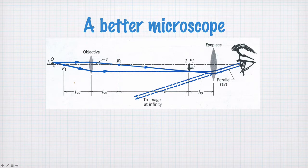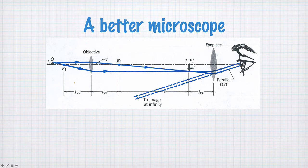Here is the object which you wish to magnify. The first lens is called the objective, and the light will come in to the objective. We have a ray parallel to the optical axis, which passes through f2, the focal length of this objective. And here we have the other ray, which passes through this focus and then is collimated.